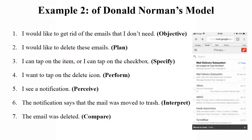Let's take another example. Your objective is: 'I would like to get rid of the emails that I don't need.' Your plan is: 'I would like to delete these emails.' Specify means: you tap all the items or check boxes to select multiple emails. Perform means: you tap on the delete icon — first you select all the mails, then you click on the delete icon. Pursue means: you see a notification asking you to confirm the deletion.